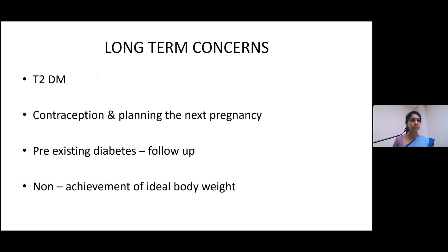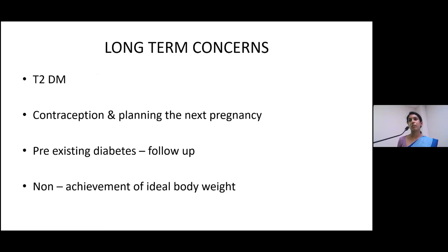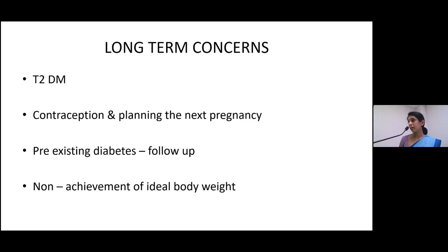Long-term concerns include type 2 diabetes in later life. On discharge, if blood sugars are normal — especially in gestational diabetes — do not simply say the patient is well and safe. Bring them back to the clinic to recheck for diabetes, usually when the baby is brought back for vaccination. Plan an OGTT, interpret the results, and discuss them with the patient. If normal, ask them to repeat blood sugars at least yearly or once every three years depending on risk.